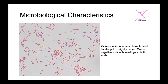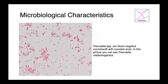This is Diclobacter nodusis, another gram-negative rod, much shorter than Fusobacterium and also a little bit plumper. It's a shorter squat rod, characterized by bipolar swellings on either end, giving it an almost dumbbell-like appearance, and the rods are also slightly curved. And here we have Prevotella — these are gram-negative coccobacilli, either very short gram-negative rods or slightly elongated cocci. This particular culture is Prevotella melaninogenica.